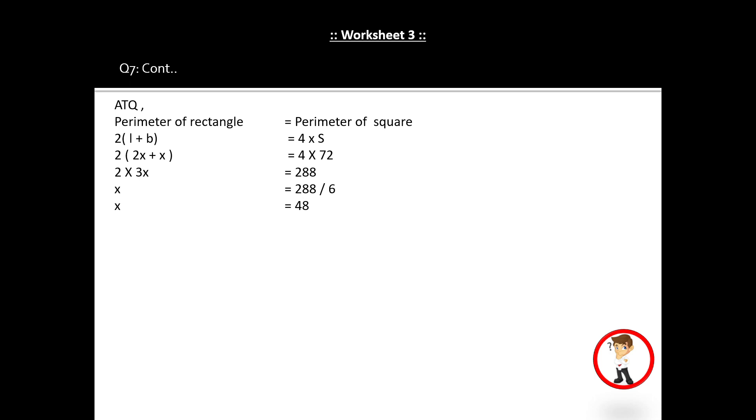According to the question (ATQ), perimeter of the rectangle and perimeter of the square are equal. So instead of perimeter of rectangle, we write 2(L+B). Instead of perimeter of square, we write 4 times side.